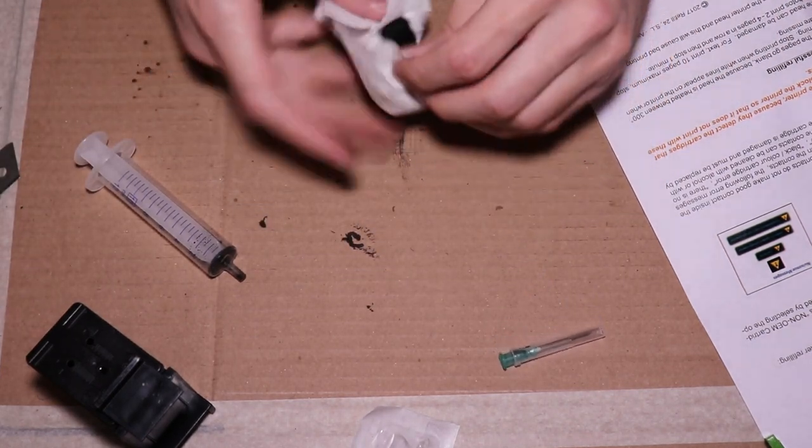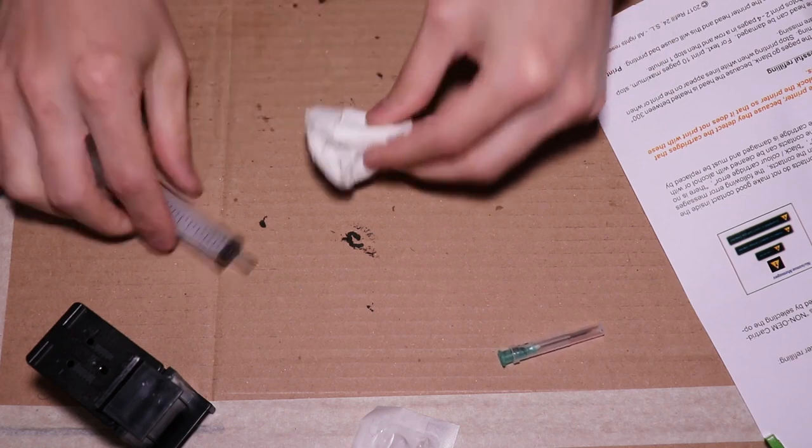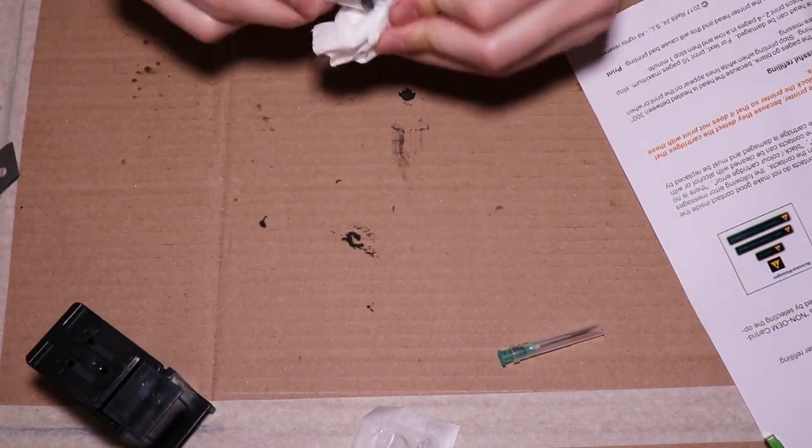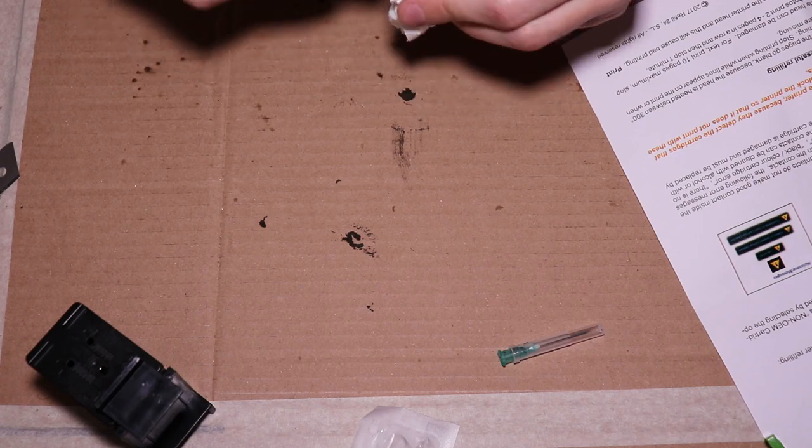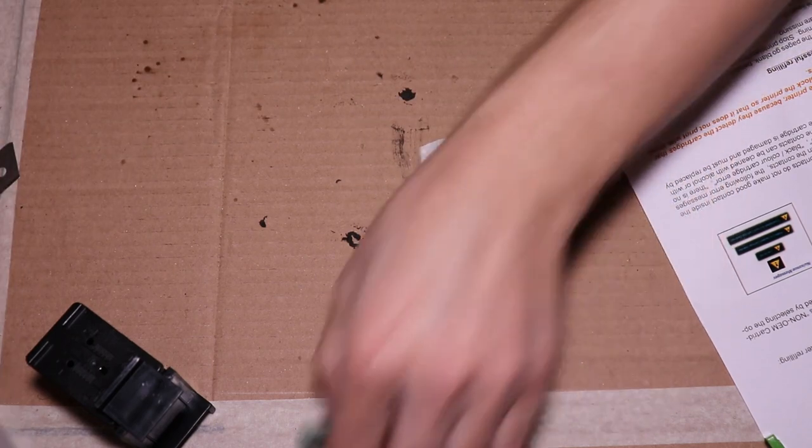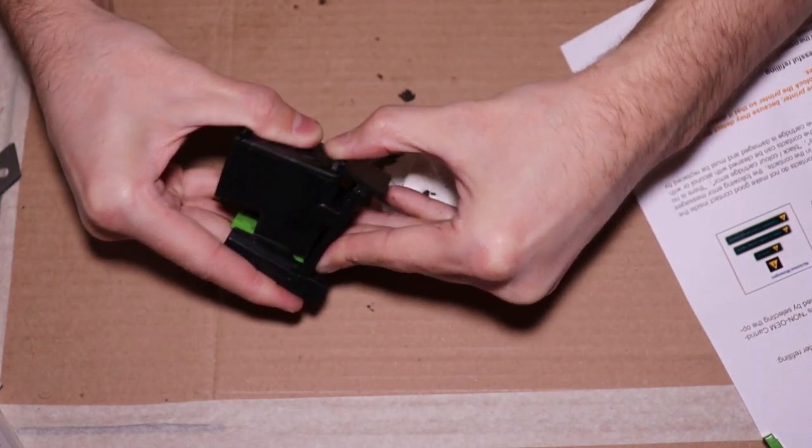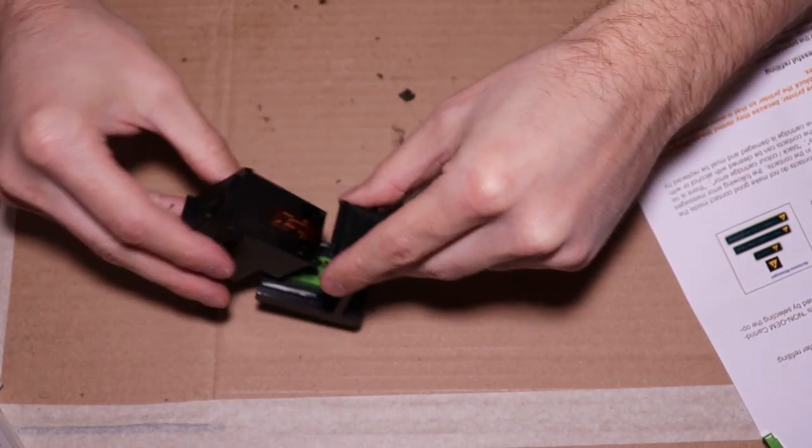You just remove the label, fill up the syringe with ink and you inject it in the cartridge. The cartridge has a sponge inside that holds the ink. And usually, after you do this procedure too many times, the sponge gets degraded and doesn't hold too much ink.